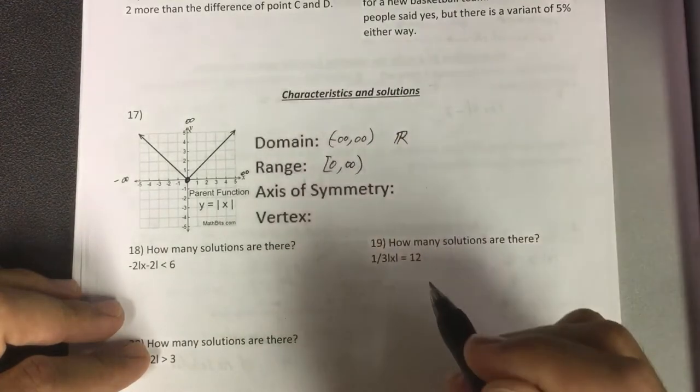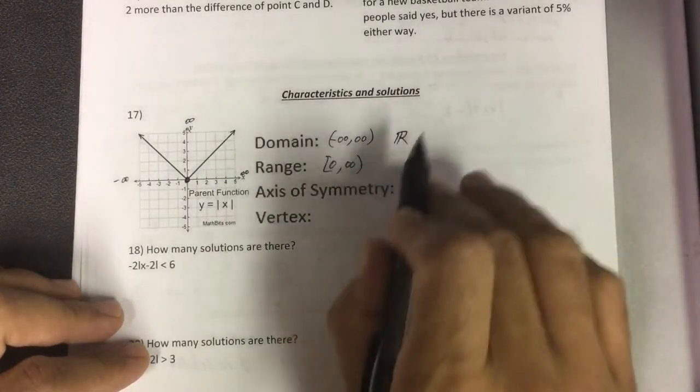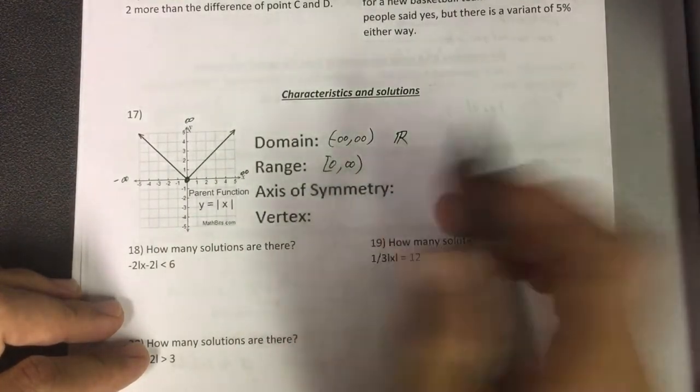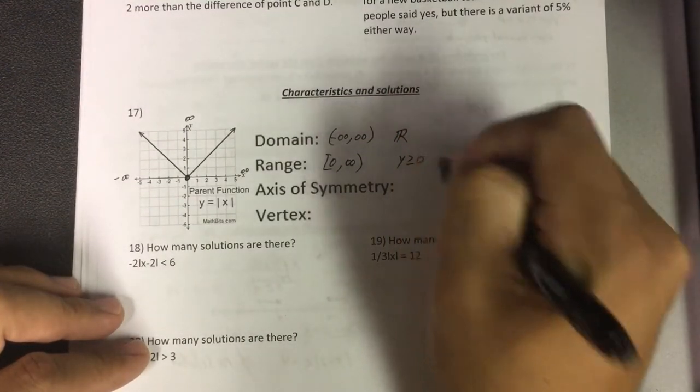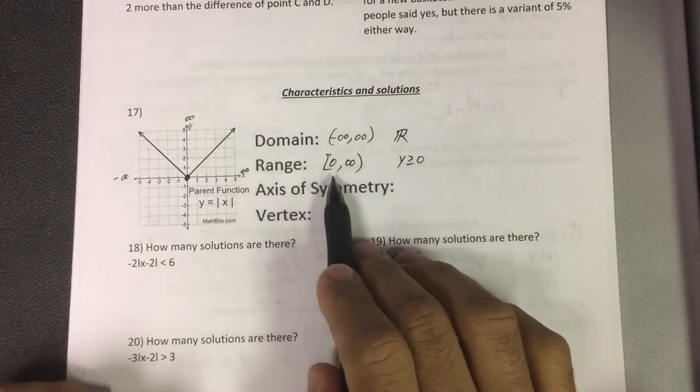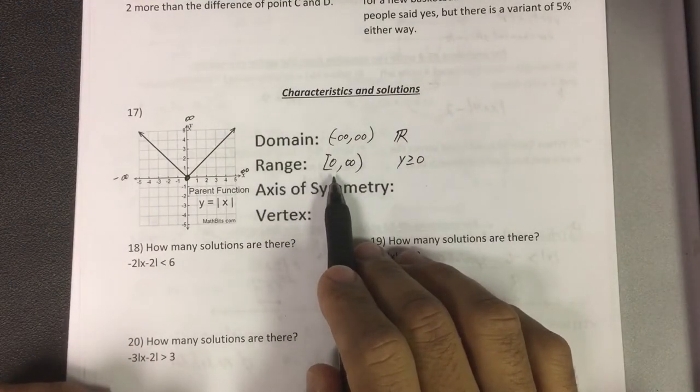How do we write this in terms of the other way? We say that y is greater than or equal to zero. That's what this means.